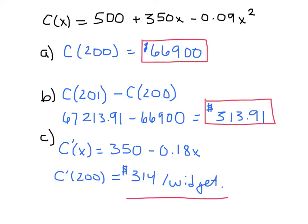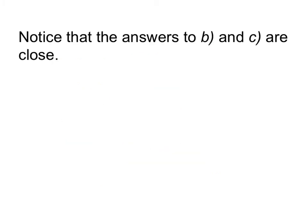And what's interesting is look at these two values here: 313.91 and 314. It appears that the rate of change at 200, at a production level of 200 widgets, is very close to the cost for the 201st widget.